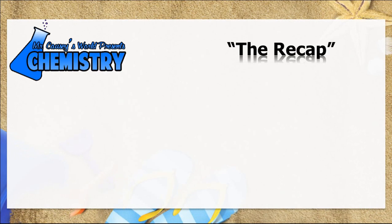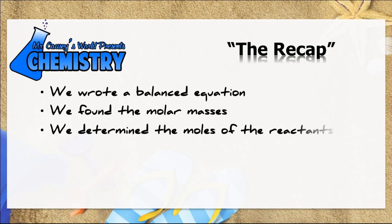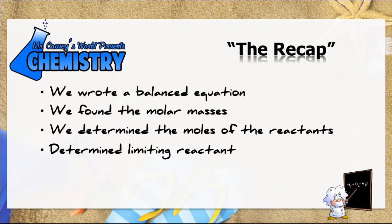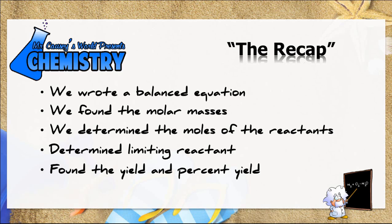All right, the recap: We wrote a balanced equation, we found the molar masses, we determined the moles of the reactants, we determined the limiting reactant, and we found the yield and the percent yield. You could also find your error using those same numbers—it wouldn't be that hard. Error is just going to be compared to the accepted value, what should have been found and what you actually got. So that could be a subject for another video.